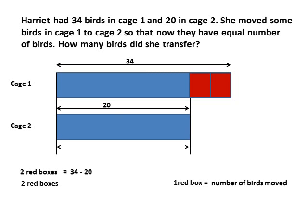So if two red boxes equal 34 minus 20, that is equal to 14. Then one red box is equal to 7. Remember, one red box equals the number of birds removed. The question is how many birds did you transfer — so that answers your question.